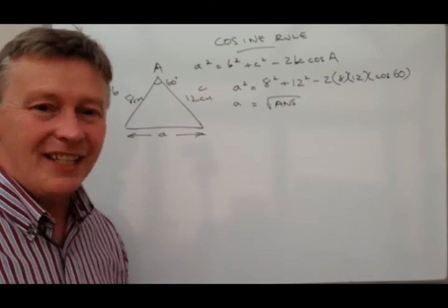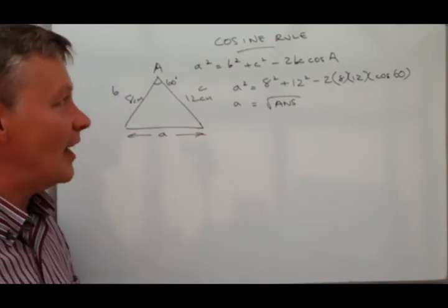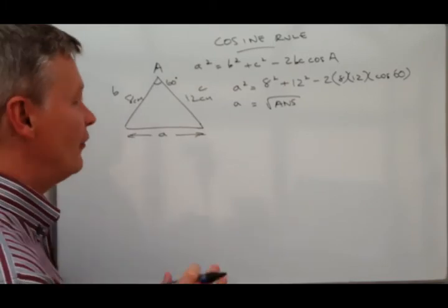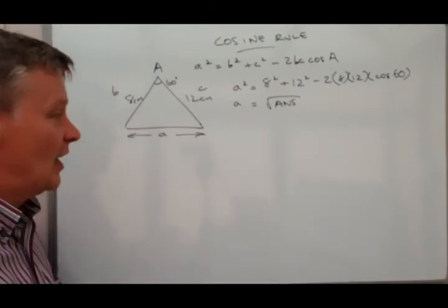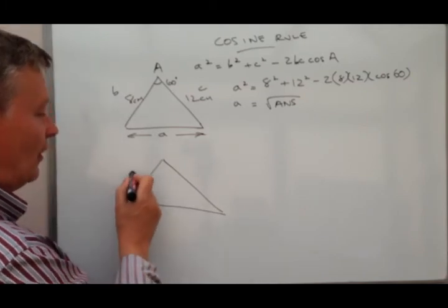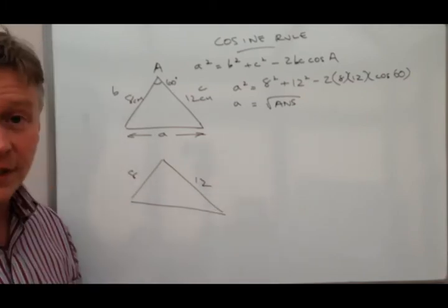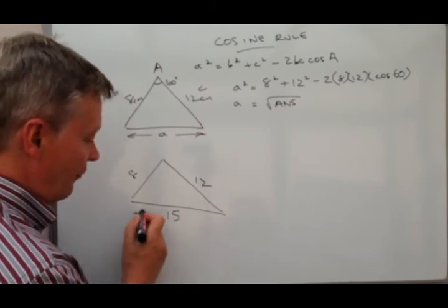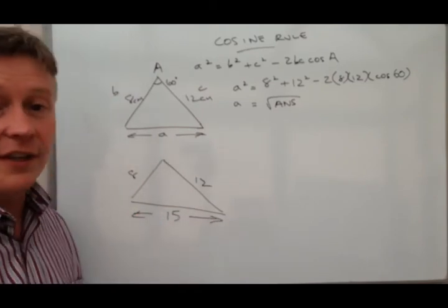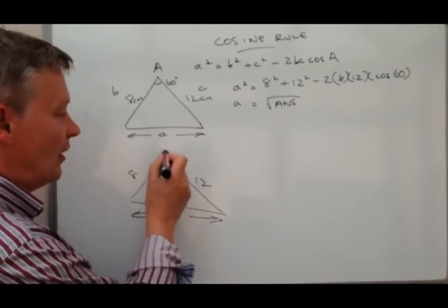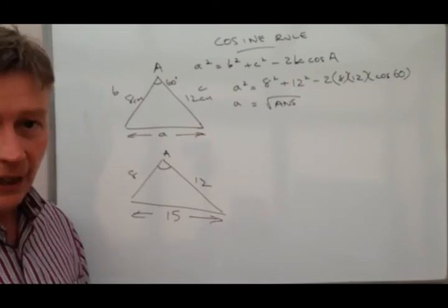So one of the other things you need to be aware of is the second application for the cosine rule, which is finding out the value of an angle. Let's say we've got exactly the same triangle and we've got 8 centimeters here, 12 centimeters here, but let's say for instance this is given to you as 15 centimeters, and what they're asking us to do is to work out this value which again we'll call angle A.